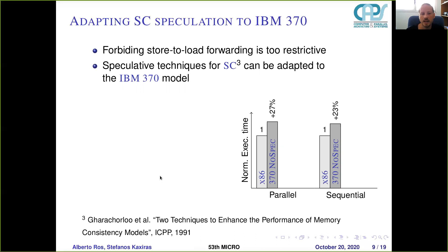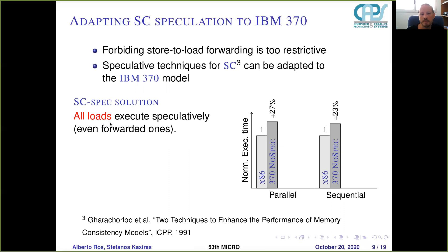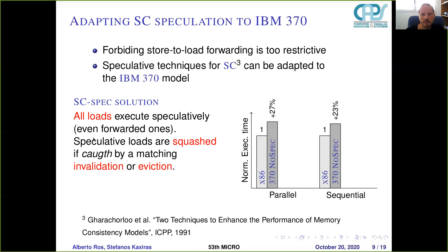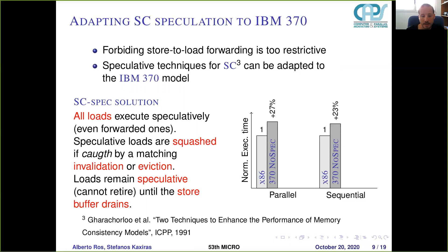We can take the speculative techniques proposed by Gharachorloo et al. in their ISCA paper, targeting sequential consistency, and adapt them to our IBM 370 model. In this adaptation, all loads execute speculatively, even those that get values forwarded from stores. Speculative loads will be squashed if they are caught — meaning an invalidation or eviction from cache matches the address of the speculative load. Loads will remain speculative and cannot retire from the processor until the store buffer drains. This SC technique adapted to IBM 370 gives a lot of extra performance for parallel applications, but we still have a 14% increase in execution time for sequential applications.